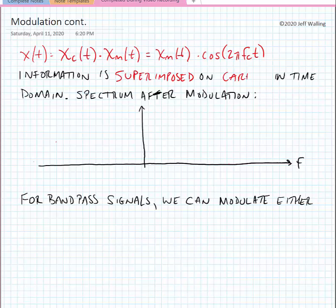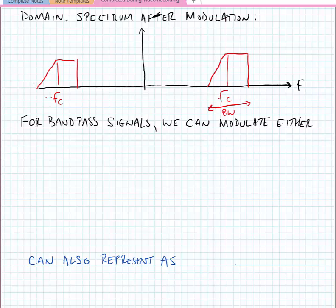If we look at this in the frequency domain, our spectrum after modulation is as follows: we have our modulating waveform centered at frequency plus fc and minus fc and the bandwidth stays the same as it was before the modulation. For bandpass signals we can modulate either in the amplitude or phase domain or both.